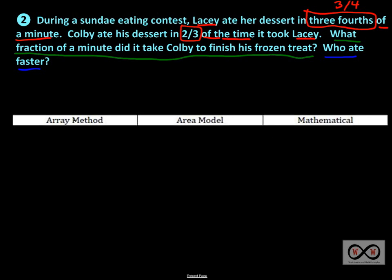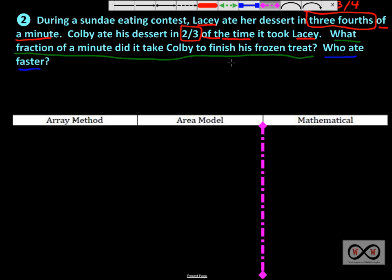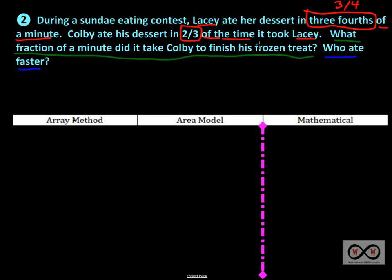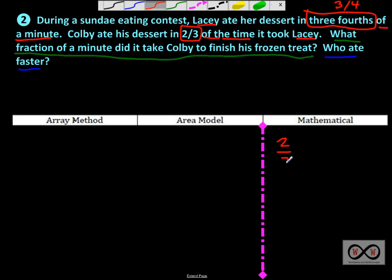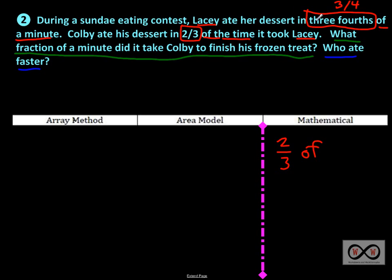Let's get started solving this. We'll work on the mathematical method first. We know our first job: what fraction of a minute did it take Colby to finish his frozen treat? We see it says two-thirds of the time it took Lacey. So we're thinking two-thirds of the time it took Lacey to eat her dessert — and three-fourths was our clue for Lacey's time. So we've got two-thirds of three-fourths. The word 'of' often means multiply, so we have two-thirds of three-fourths.